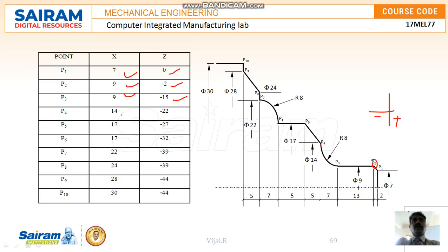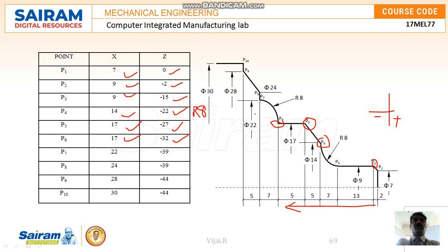From P3 to P4, the diameter is 14 and the Z travel is minus 22. We also need to note the radius R8 at that curve. P5 has coordinate values 17 and minus 27. P6 is at 17 and minus 32. P7 has diameter 22 and distance minus 39, since 32 plus 7 equals 39. P8 shows the diameter increasing and P9 has diameter 28 at distance minus 44.